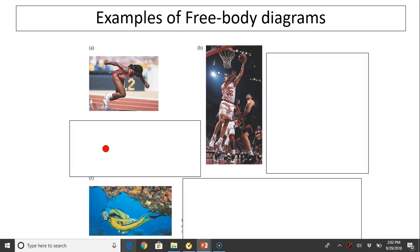The first example shows a runner just about to run. At this point, we use a dot to represent the runner. There are two forces acting on the runner: one is gravity, the other is the supporting force from the block, the normal force.